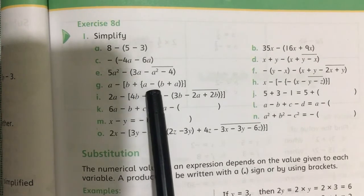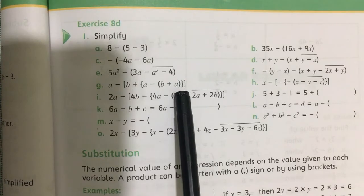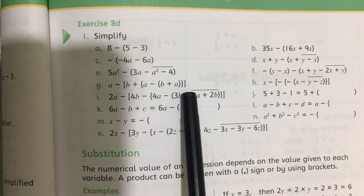So part number g is: a minus square bracket, b plus curly bracket, a minus small bracket b plus a, small bracket close, then curly bracket close, and then square bracket close.